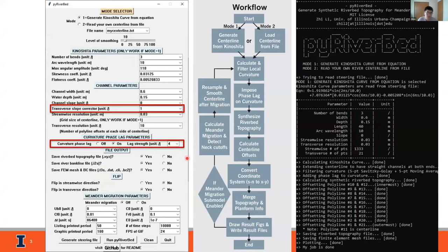Now let's look at some details about the model. First, it has a graphical interface with two modes to select: generating Kinoshita curve, or loading your own centerline coordinates. If the first mode is selected, users need to enter Kinoshita parameters here, which include the number of bends, the arc wavelength, the maximum angular amplitude, the skewness coefficient, and the flatness coefficient. If the second mode is selected, a level of smoothing can be specified based on the quality of the user-provided centerline coordinates. The channel width, water depth, channel slope, and discretization resolution in both streamwise and transverse direction should be specified.